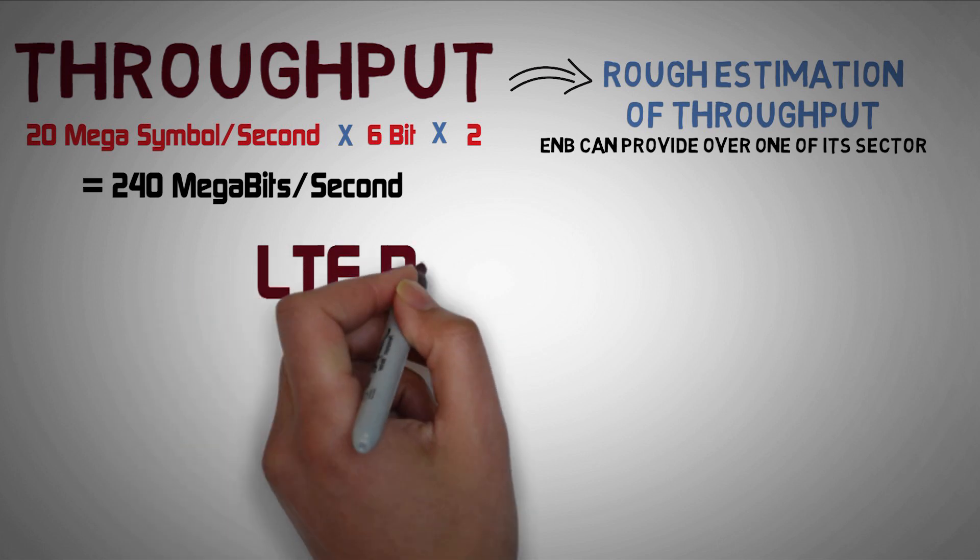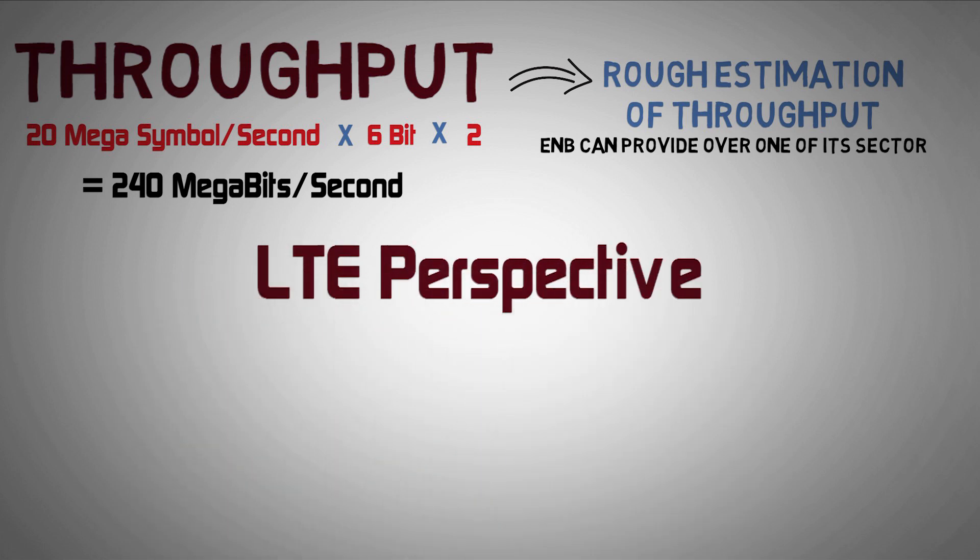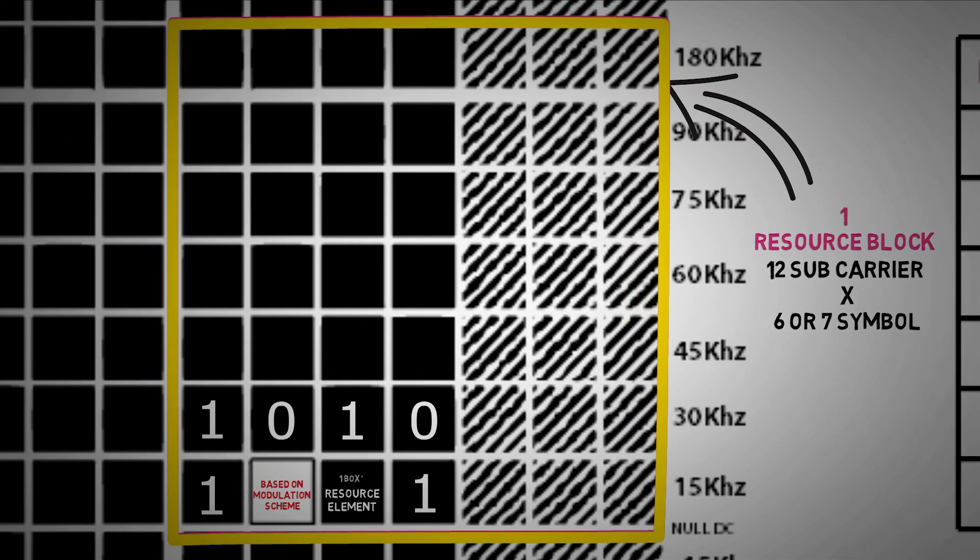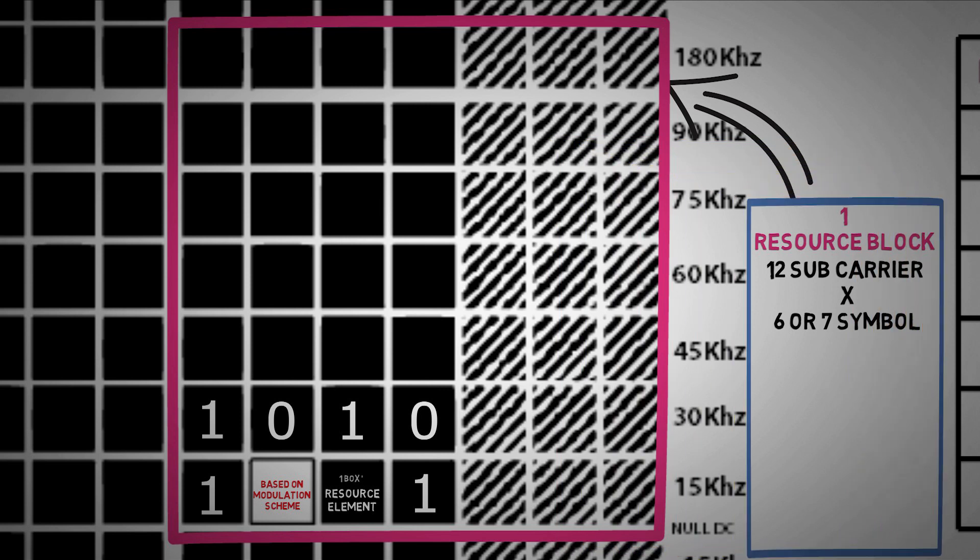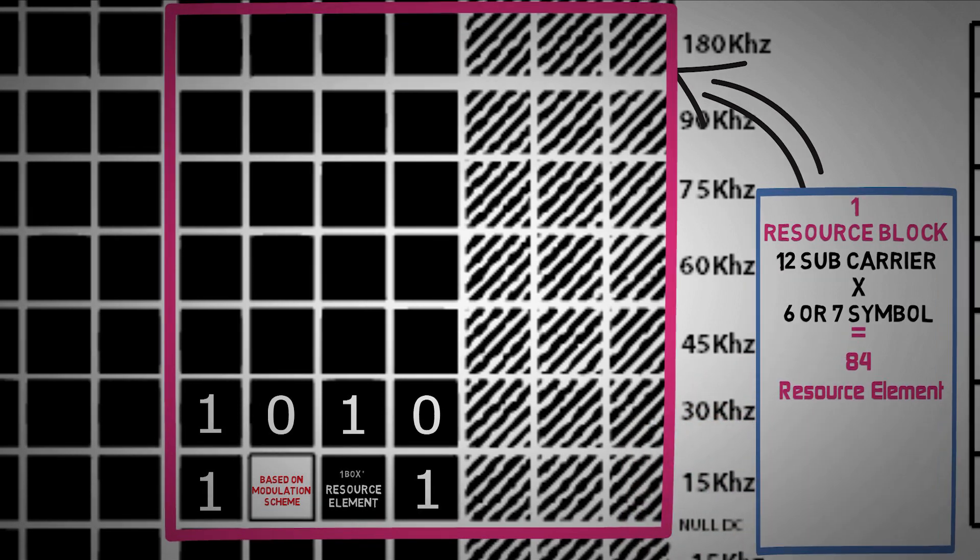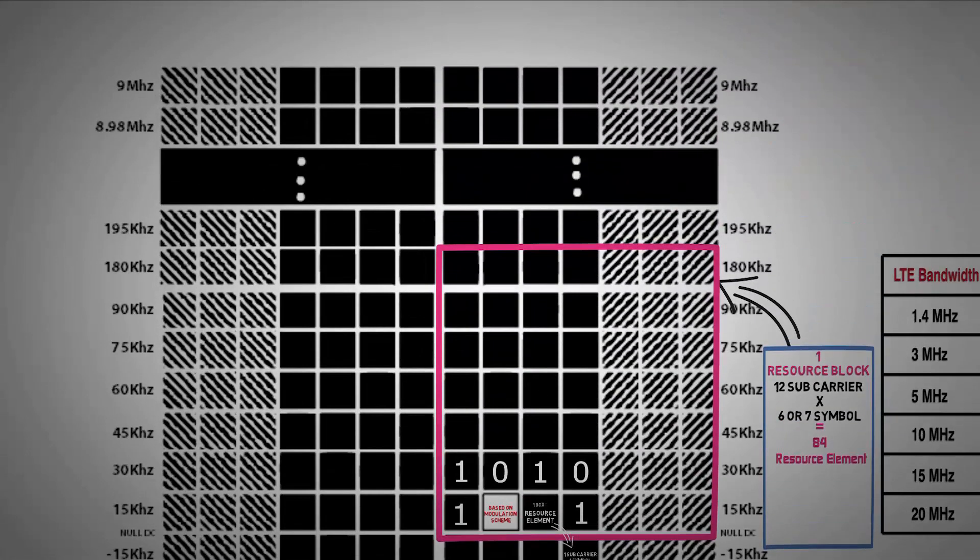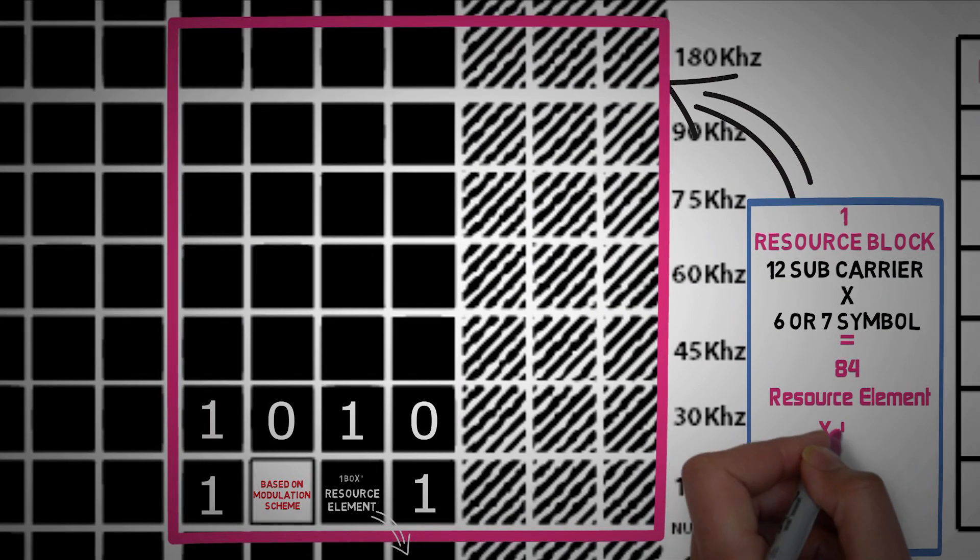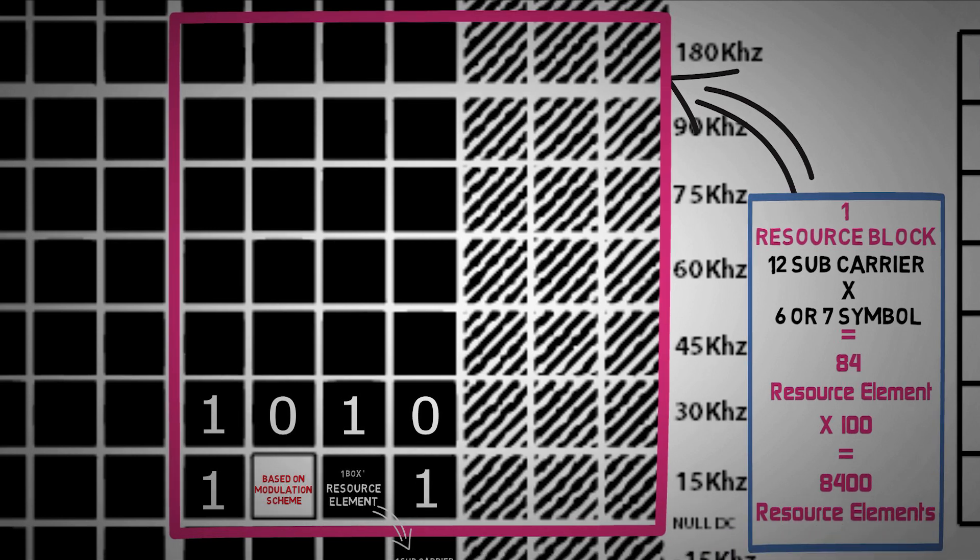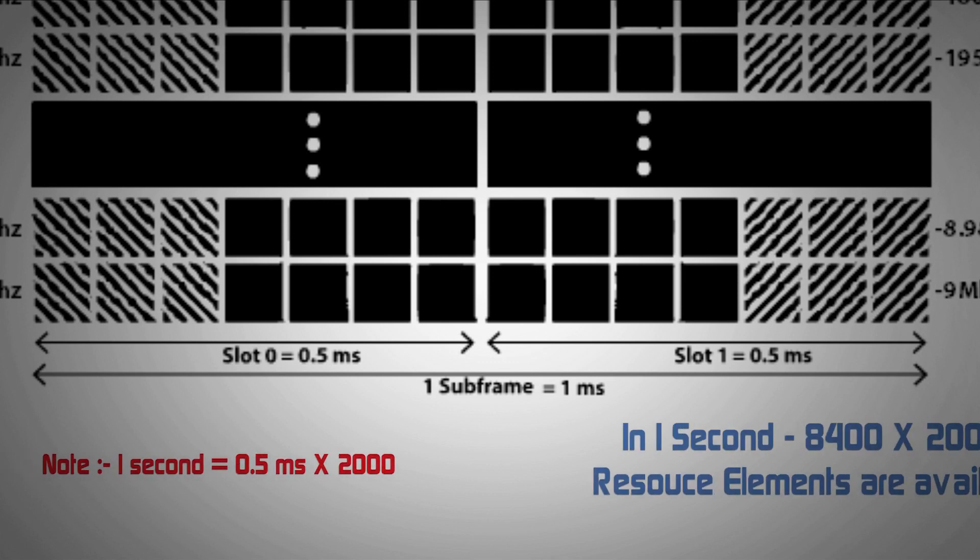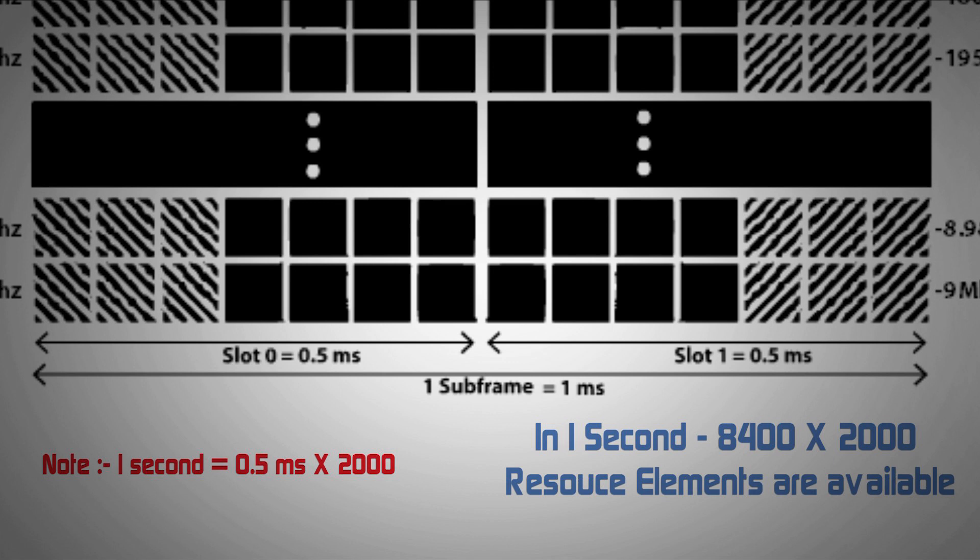Now let's calculate it from LTE perspective using a more precise approach. To calculate throughput we first need to calculate the number of resource elements in a given bandwidth. Each resource block in LTE consists of 12 subcarriers and 6 or 7 OFDM symbols, so each resource block has 84 resource elements where one resource element equals 1 subcarrier and 1 symbol. In an LTE bandwidth of 20 MHz we can have a maximum of 100 resource blocks, thus a total of 8,400 resource elements. These 8,400 resource elements are available for 0.5 milliseconds, so in 1 second a total of 8,400 times 2,000 resource elements are available.